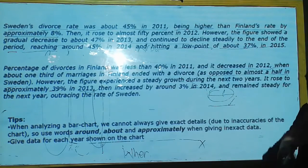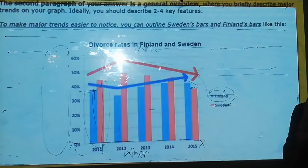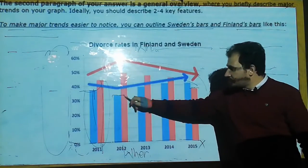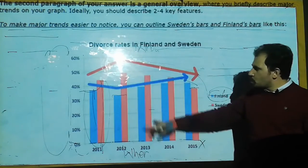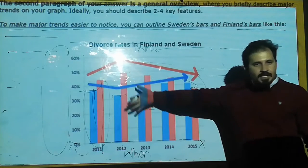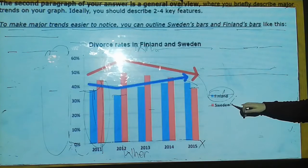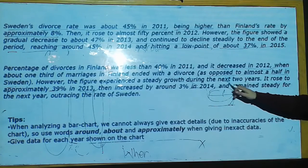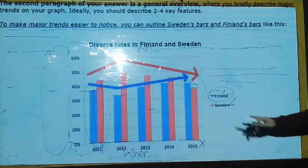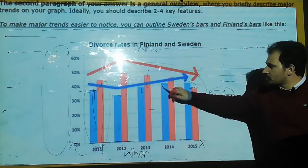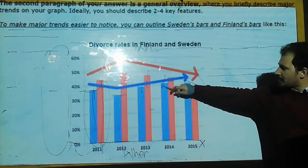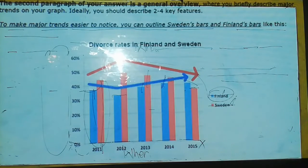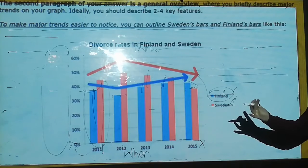As opposed to almost a half in Sweden — we are doing a comparison here. In 2012 it's too much lower compared to the length of Sweden — it's almost half of that. However, Finland experienced a sharp growth during the next two years. The divorce rate in Finland showed a gradual increase in the next two years, that is 2013 and 2014.